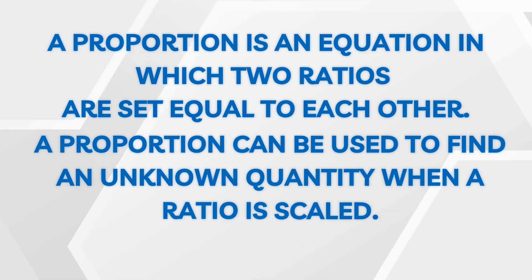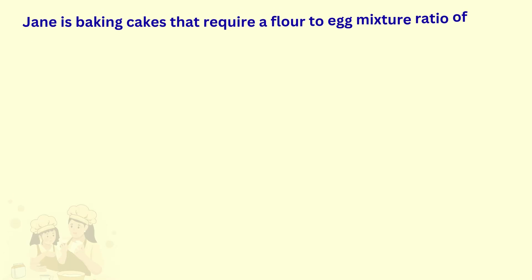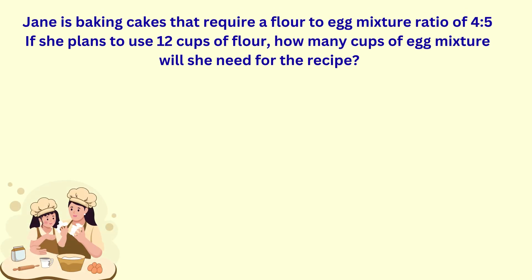A proportion is an equation in which two ratios are set equal to each other. Proportion is used to find an unknown quantity whenever a ratio is scaled. For example, Jane is baking cakes that require a flour-to-egg mixture ratio of four to five. If she plans to use twelve cups of flour, how many cups of egg mixture will she need? The ratio of flour to egg mixture is four to five, meaning for every four cups of flour, Jane needs five cups of egg mixture. Jane has twelve cups of flour, so the new ratio will have twelve in the flour part.